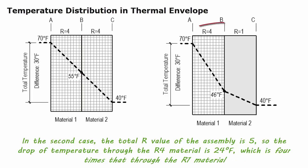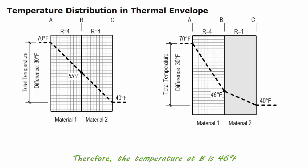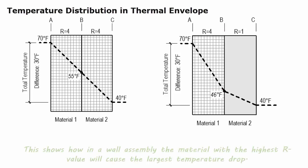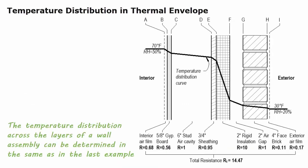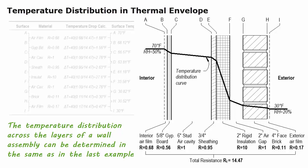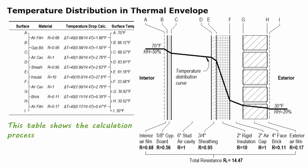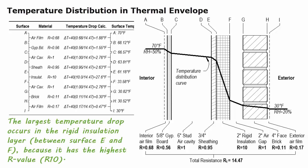In the second case, the total R-value of the assembly is 5, so the drop of the temperature through the R-4 material is 24°F, and the temperature at surface B is 46°F. This shows how in a wall assembly the material with the highest R-value will cause the largest temperature drop. The temperature distribution across the layers of a wall assembly can be determined the same way, and the largest temperature drop occurs in the rigid insulation layer because it has the highest R-value.